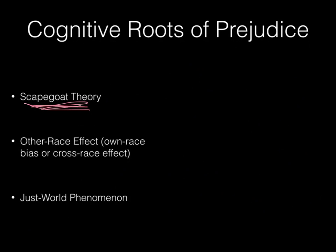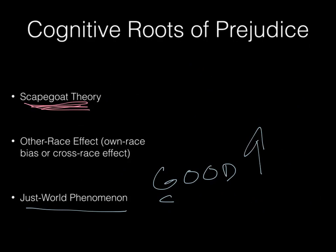The last term is the just world phenomenon. The just world phenomenon is the idea that good is rewarded and evil is punished. By believing that, we create a just world where things make sense. All this social prejudice is really about making sense of the world — even if it's a bad way of doing so. When we say evil gets punished and other groups are being bad, that's why they're being punished or not given as much financial advantage. It's the just world phenomenon — your group is good and their group is evil. That's all we've got for social relations.